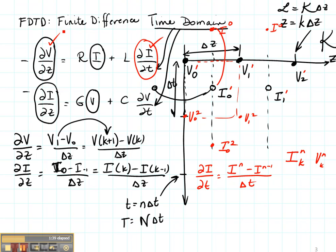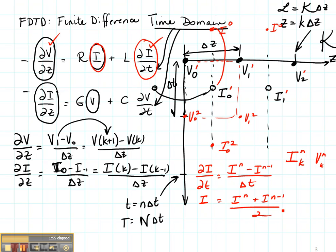But what about my current term — this current term right here? Unfortunately, the current and its derivative can't show up at the same time. So when I handle the current, I need to consider I at N plus I at N minus 1 divided by 2. I just take the average of these two in order to make it come out at the correct time.